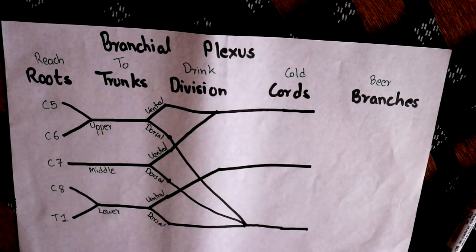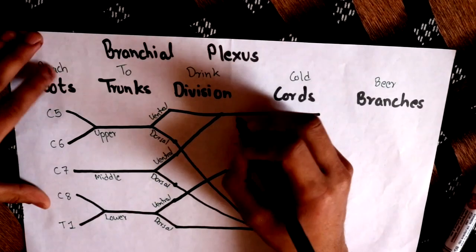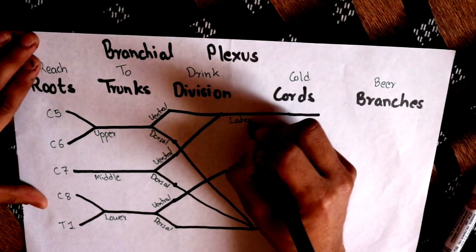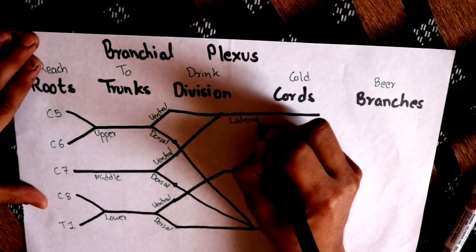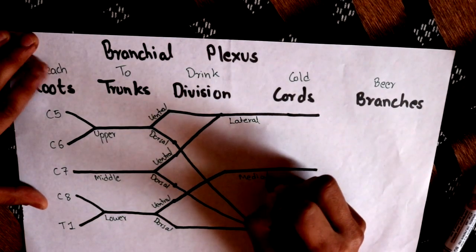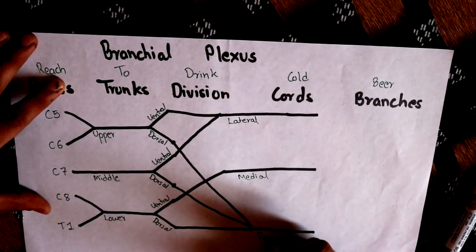So these are all the parts of the cords. First we have the lateral cord, then the medial cord, and this is the posterior cord.